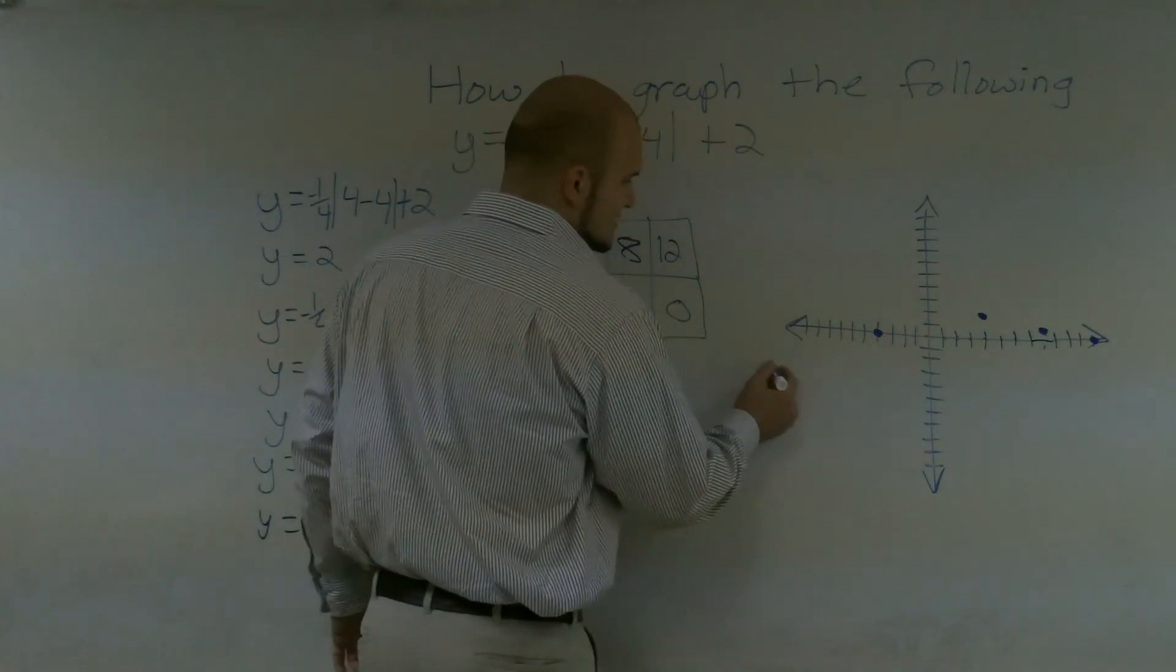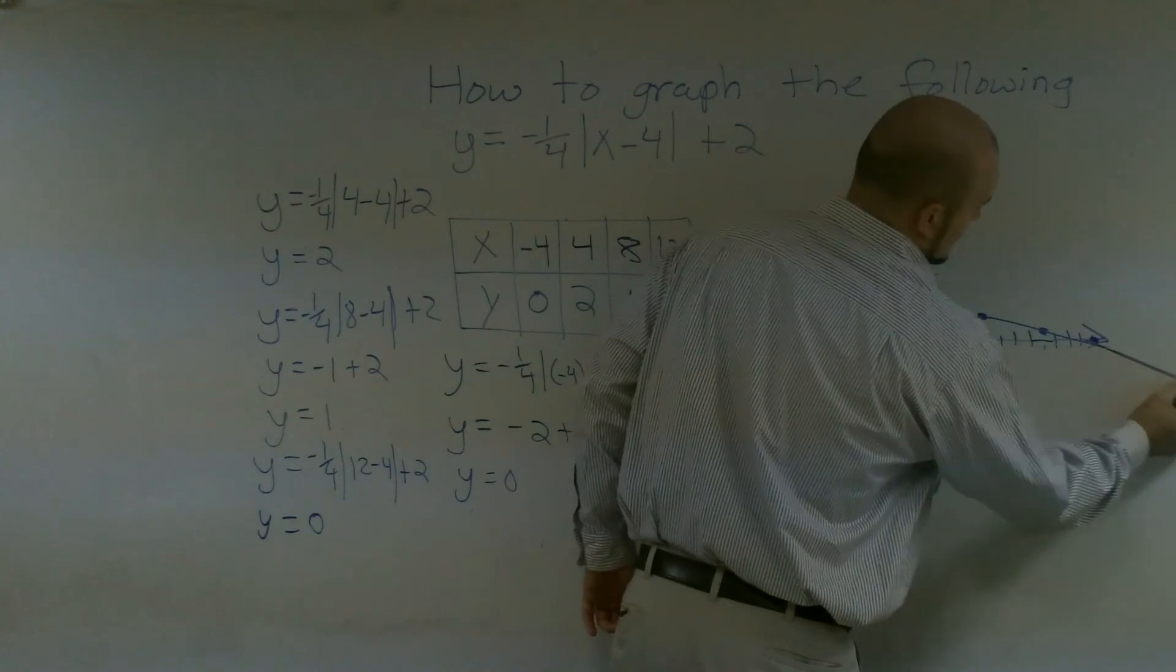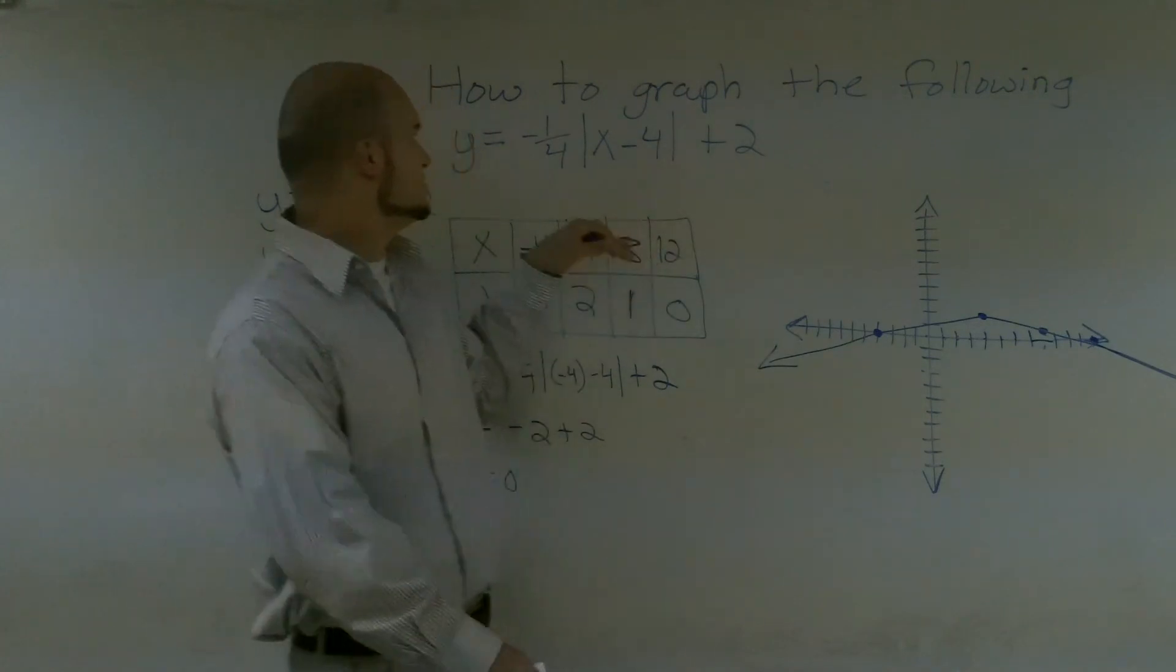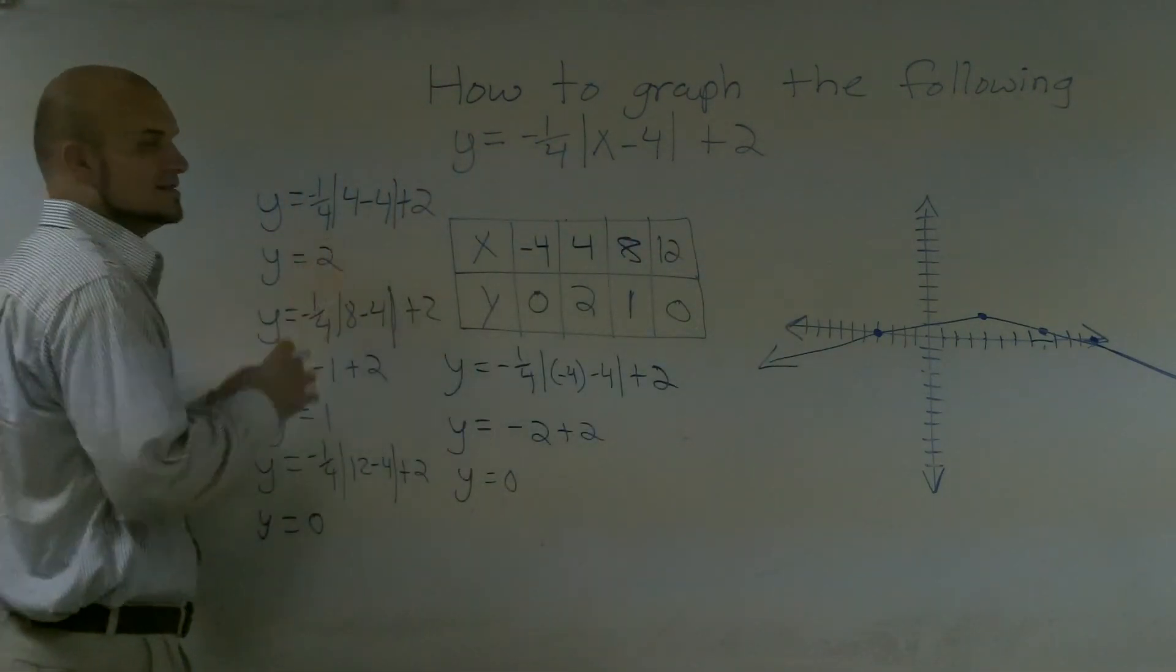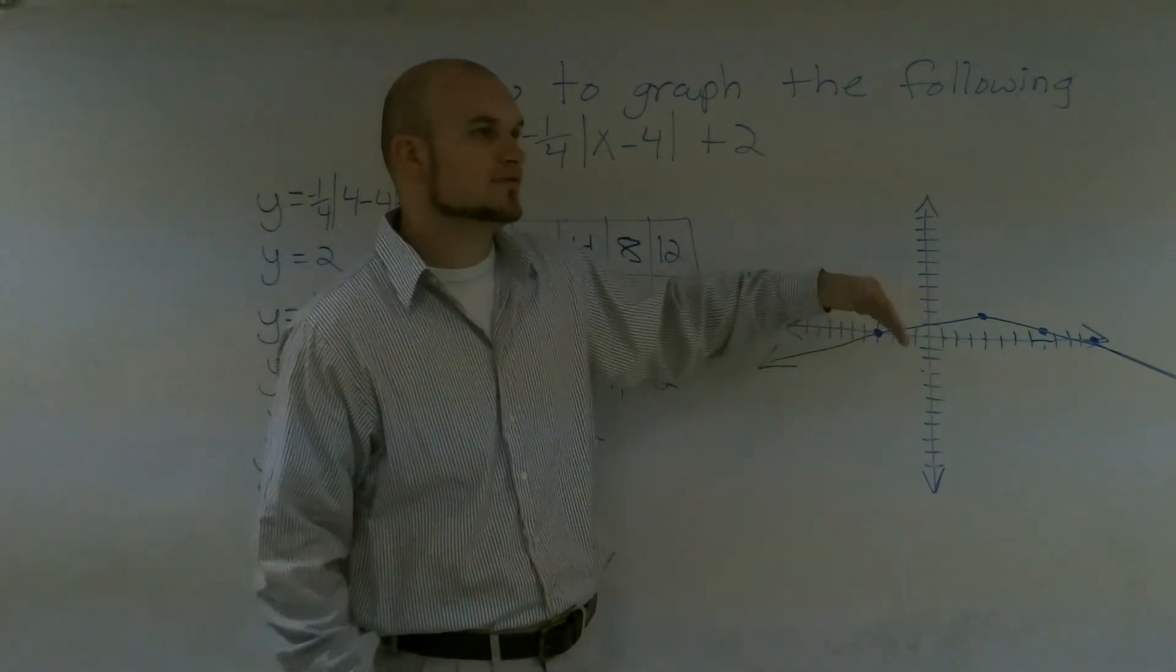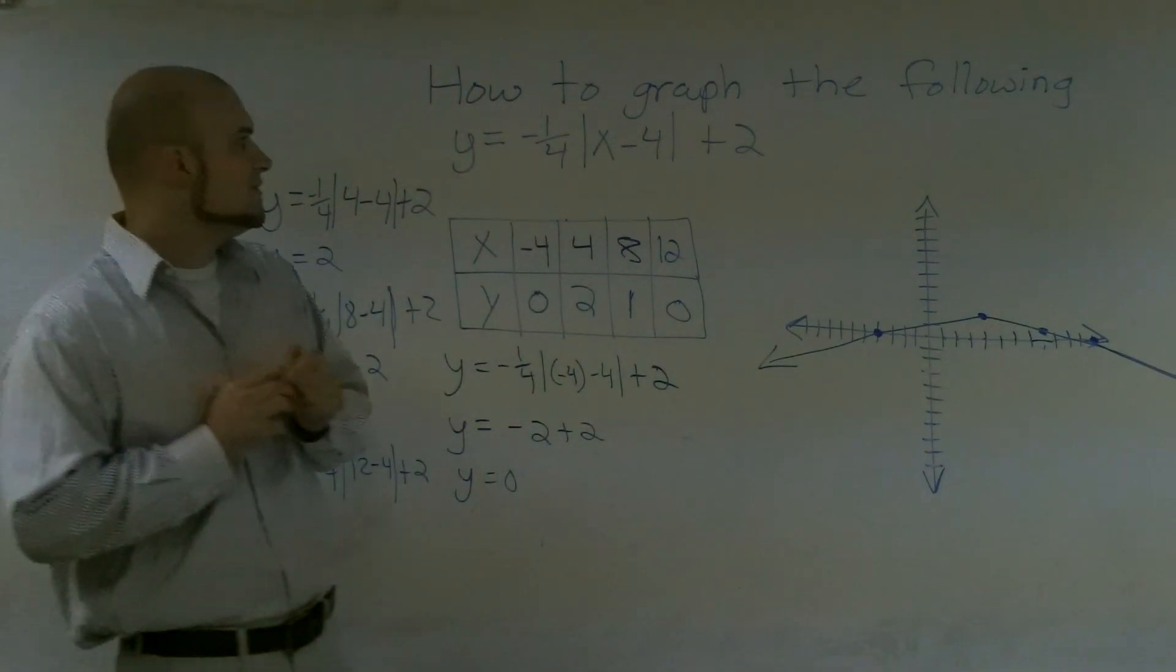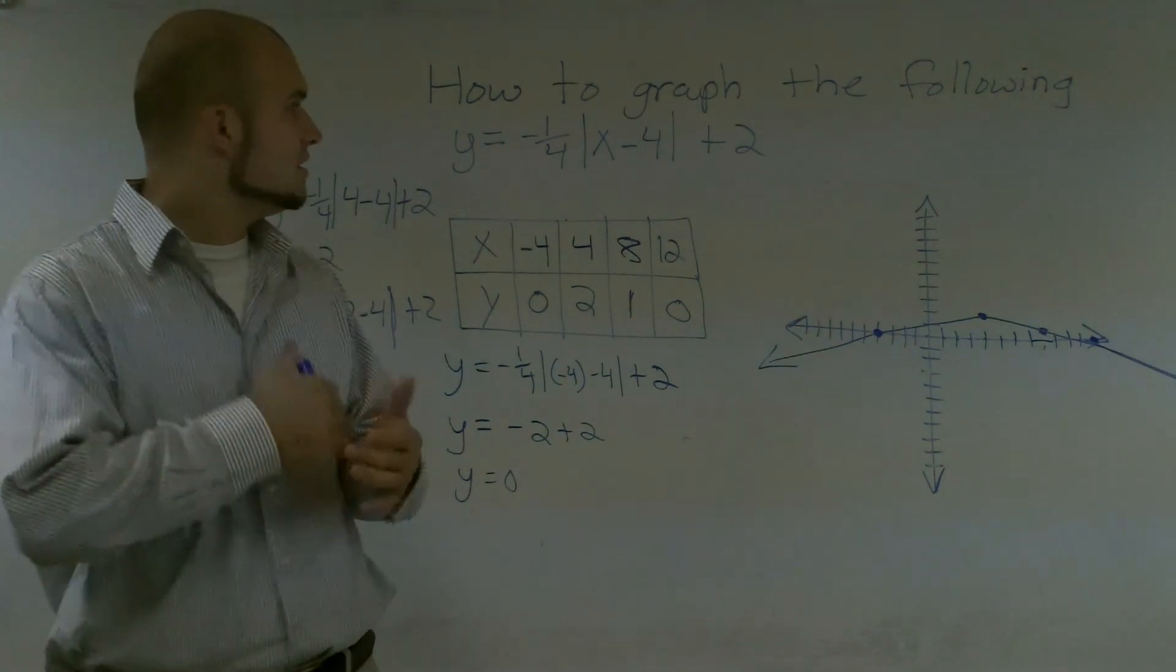Now, if I was going to go ahead and graph this, you just go ahead and connect the dots. And just remember those continue lines. So that's exactly what absolute value is. Notice we will get to the reasons on why this is moved over. Because remember, our graph is a V. Well, this is a downward V. And that's stretched and elongated out. Alright? So that's how you graph the following absolute value function, y equals negative 1/4 times absolute value of x minus 4, plus 2.